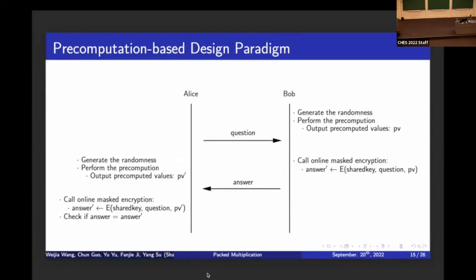This property is practical in scenarios like a challenge-response authentication protocol, where Alice presents a question and Bob must provide a valid answer using encryption from the question and a pre-shared symmetric key, protected by masking. Both Alice and Bob can pre-compute variables before the question arrives and then perform only the online computation. This strategy is practical since transmitting the question is relatively slow compared with the masked implementation.